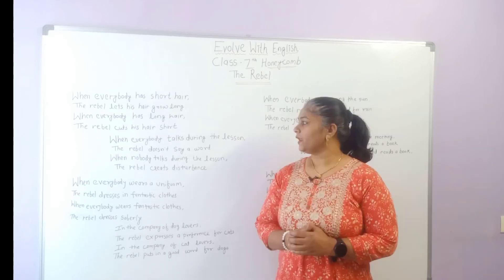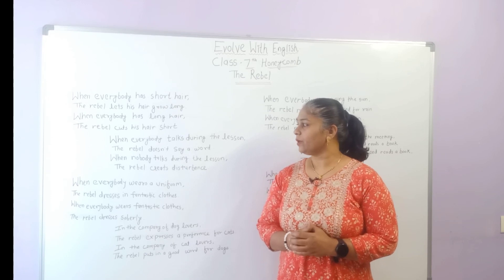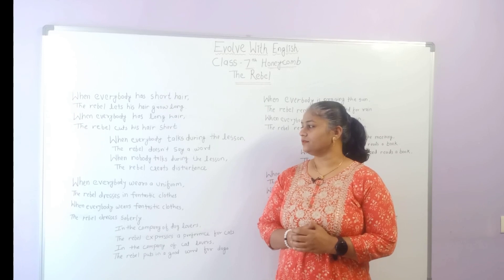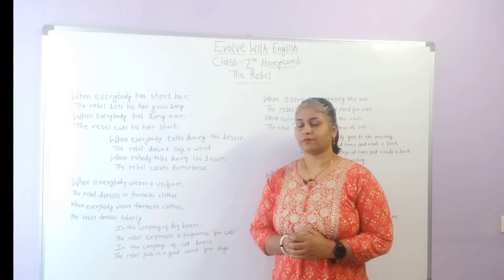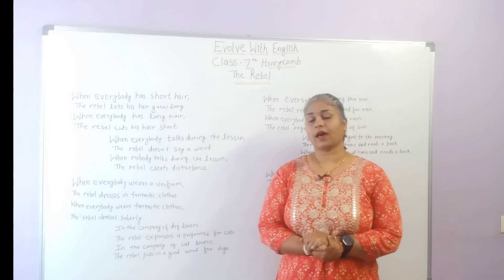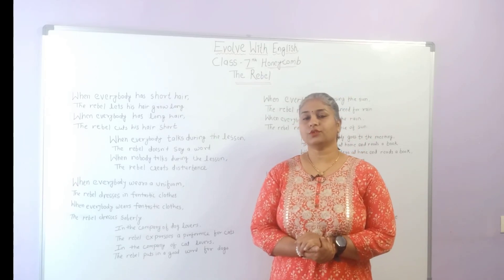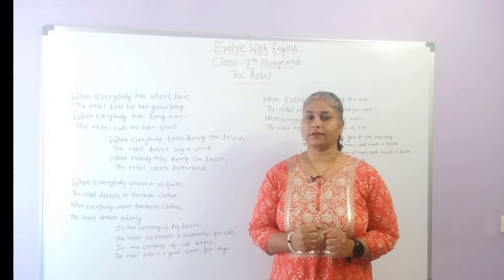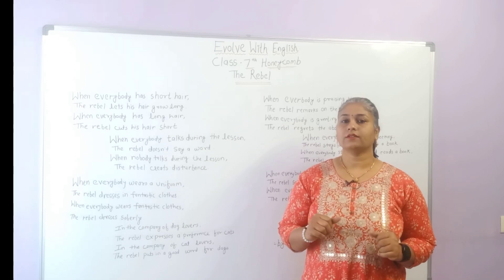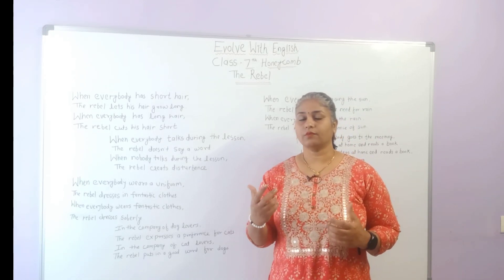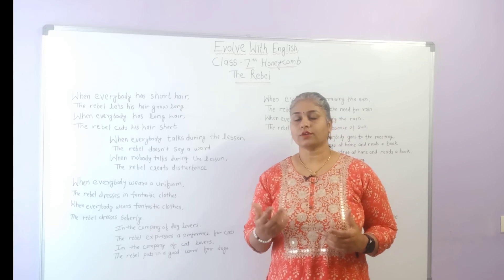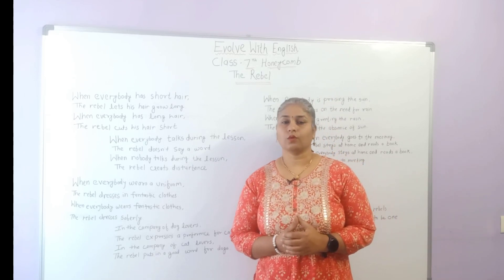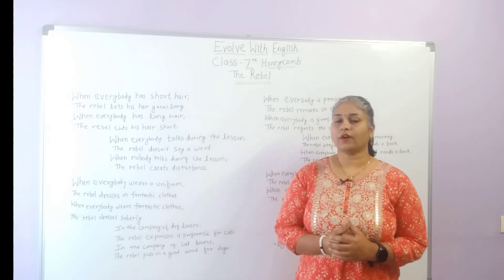In the second stanza, when everybody talks during the lesson, the rebel doesn't say a word. When nobody talks during the lesson, the rebel creates disturbance. Have you noticed in your class that some students, when everybody else is speaking, will keep silent — and when everybody is silent, they talk, express their opinions, ask questions, and disturb the class? These are the characteristics of a rebel.